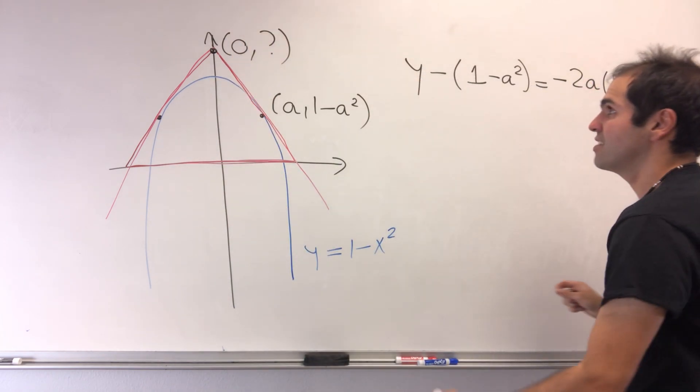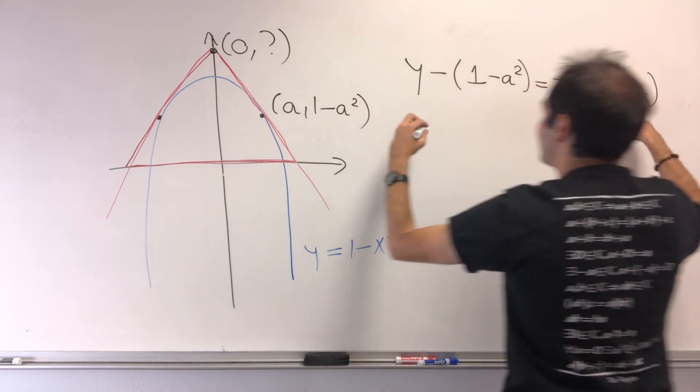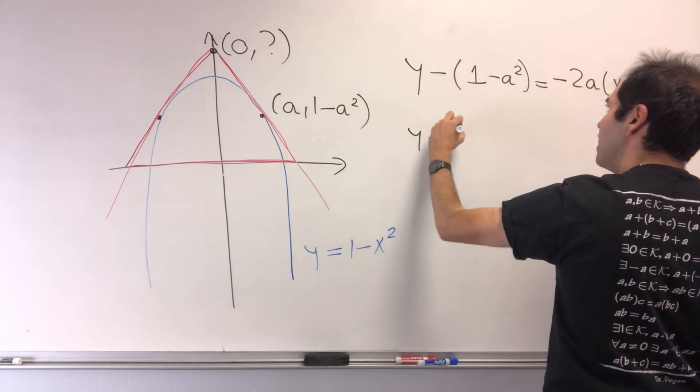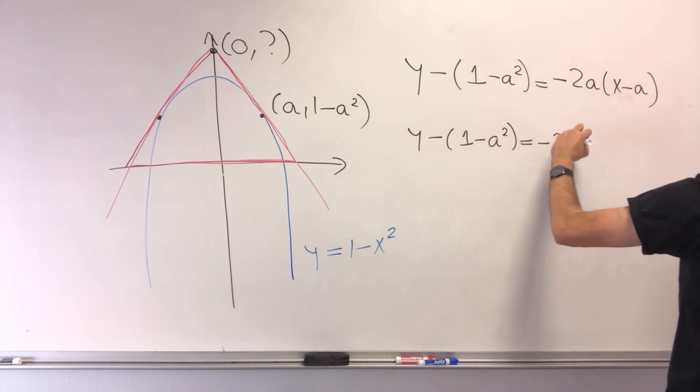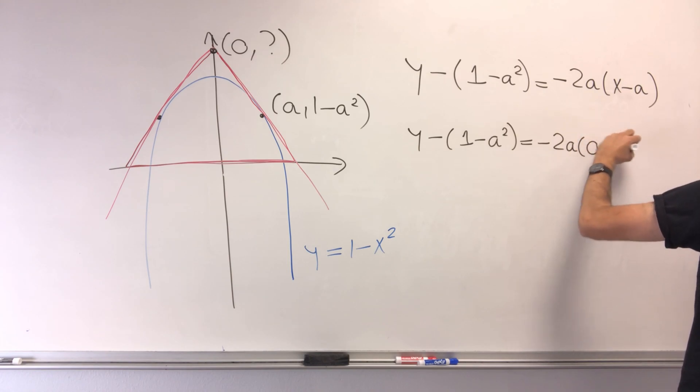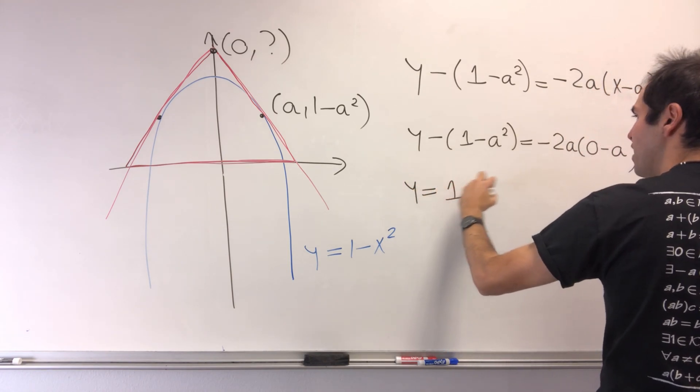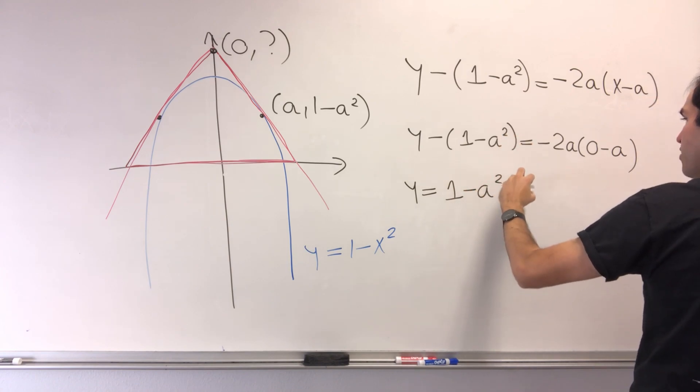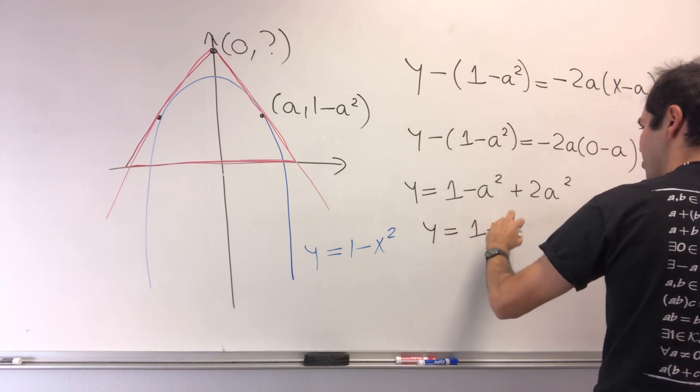Let's find that something by simply letting x equal 0 in that tangent line. So y minus (1 minus a squared) equals minus 2a times (0 minus a). And so that becomes y equals 1 minus a squared plus 2a squared. So y is 1 plus a squared.